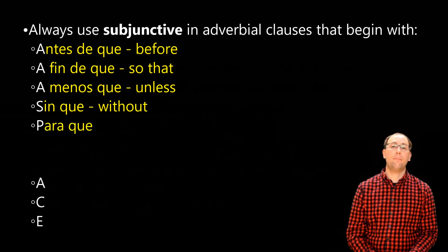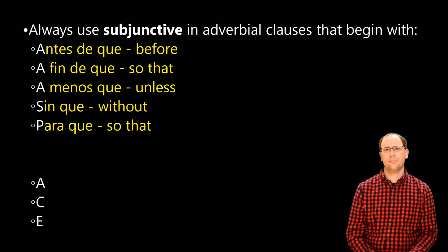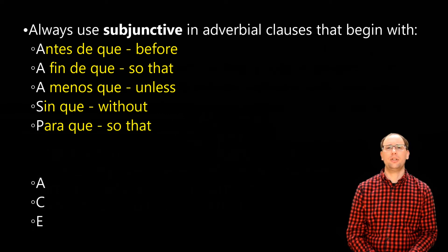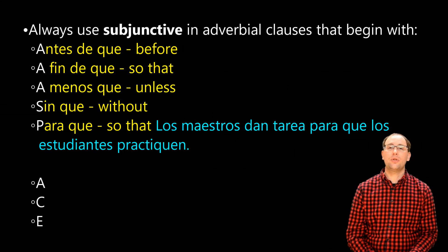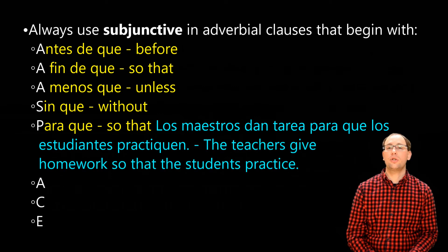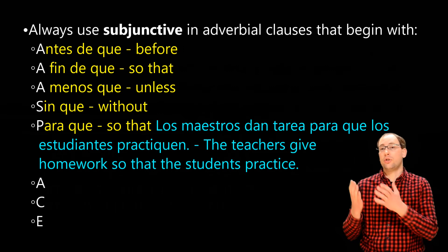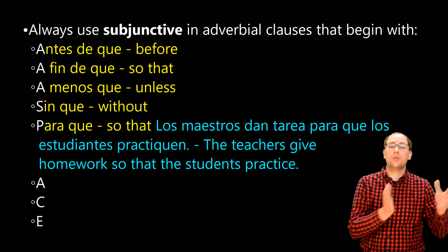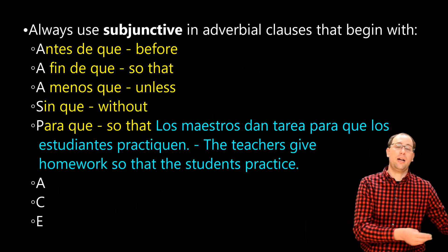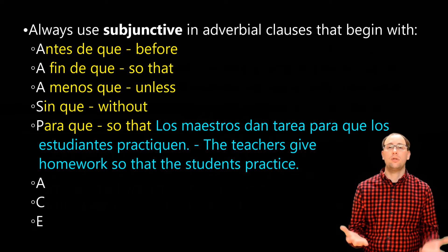The P is for 'para que,' which is another way to say 'so that' or 'in order that.' We can see that in the example: 'Los maestros dan tarea para que los estudiantes practiquen' — The teachers give homework so that the students practice. When the teachers are giving the homework, there's no certainty of the students actually practicing. So subjunctive — no certainty of completion.